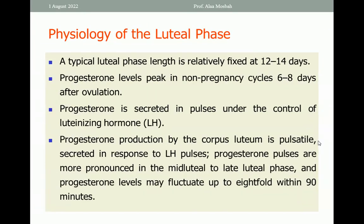The typical Luteal Phase length is relatively fixed at 12 to 14 days. Progesterone levels peak in a non-pregnancy cycle 6 to 8 days after ovulation, and progesterone is secreted in pulses under the control of the luteinizing hormone. Progesterone production by the corpus luteum is pulse-style secreted in response to LH pulses. Progesterone pulses are more pronounced in the mid-Luteal to late-Luteal phase, and progesterone levels may fluctuate up to 8-fold within 90 minutes.